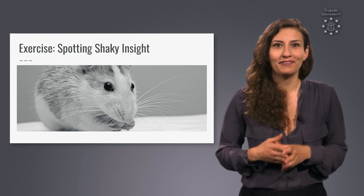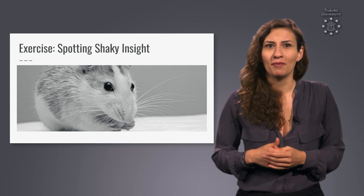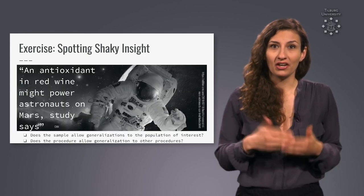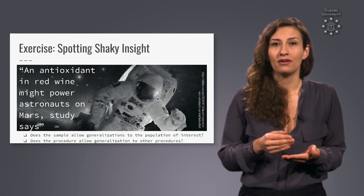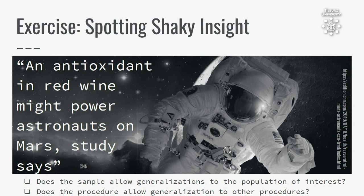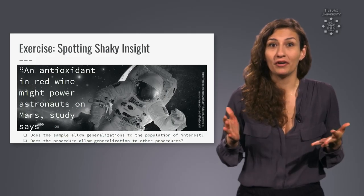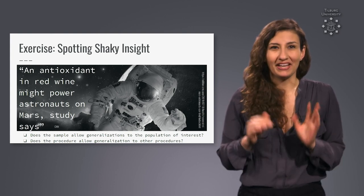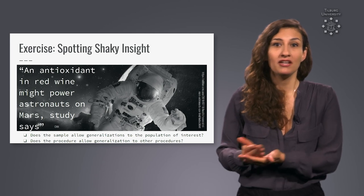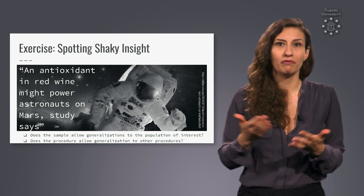Now, this study is really cool — finding a way to simulate Mars on Earth is a remarkable accomplishment. But the conclusions drawn in the news article are overstated. The article draws conclusions about humans on Mars from rats in a Mars-like situation on Earth. Two points on our checklist come to mind: it is not clear if it is permissible to draw conclusions for humans from a study with rats, and it is not clear if conclusions about life on Mars can be drawn from Mars-like simulations on Earth. We would already classify the reporting in this news article as shaky insight, even before checking the other criteria on our checklist.